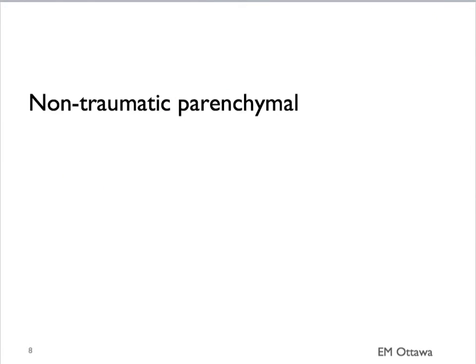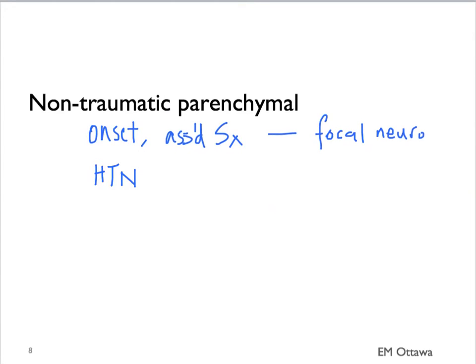For non-traumatic parenchymal bleeds, we need to know about the headaches, the onset, and associated symptoms, and in particular focal neurological deficits affecting vision, motor, sensory, or balance. As these bleeds are usually due to hypertension, we need to know about history of hypertension, whether they are on any medication for it, and whether they have taken any medication that might increase blood pressure.